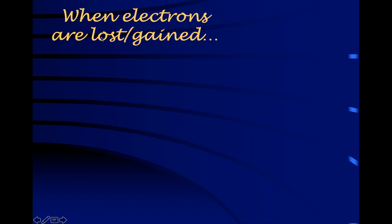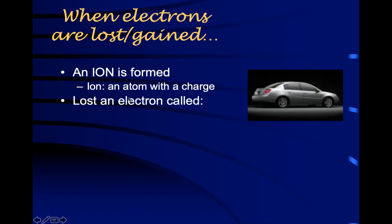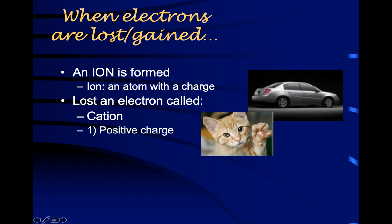When you lose and gain electrons, you create what's called an ion — an atom with a charge. You can have either a positive or a negative charge. If you lose an electron, electrons are negative, so getting rid of something negative makes you positive. That's called a cation. Cats have paws — so a cation is positive. A cation has fewer electrons than before. Why is it positive? Because it lost an electron and electrons are negative — get rid of something negative, you're more positive.